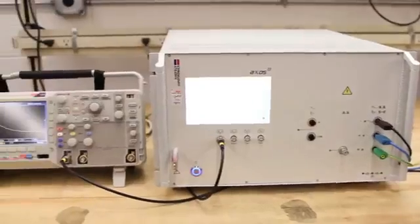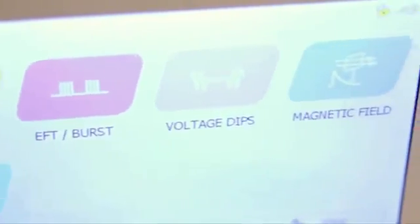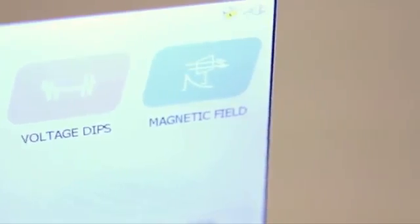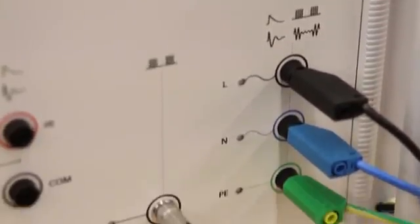The Axos 8 is capable of performing surge combination wave, ring wave, EFT or burst. With additional accessories, you can also perform telecom wave, magnetic field, as well as AC and DC voltage dips and interrupts.